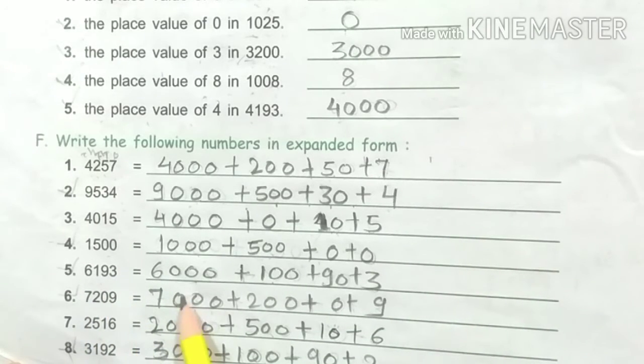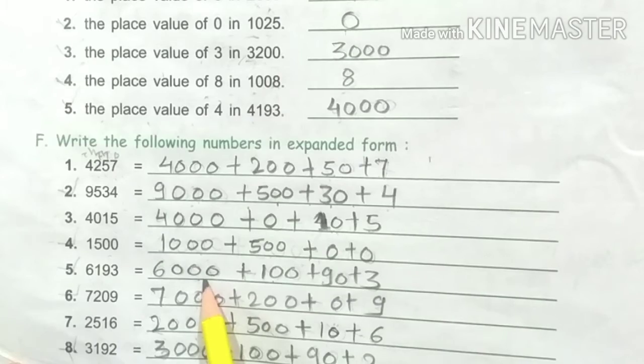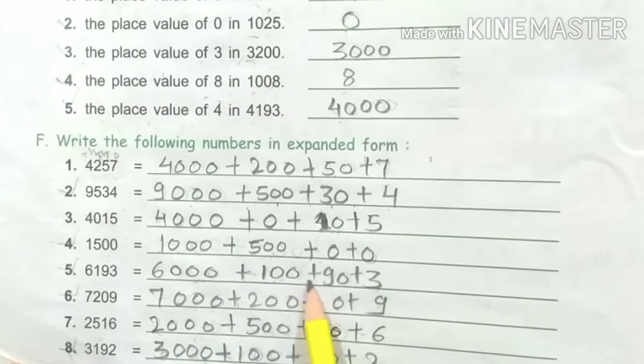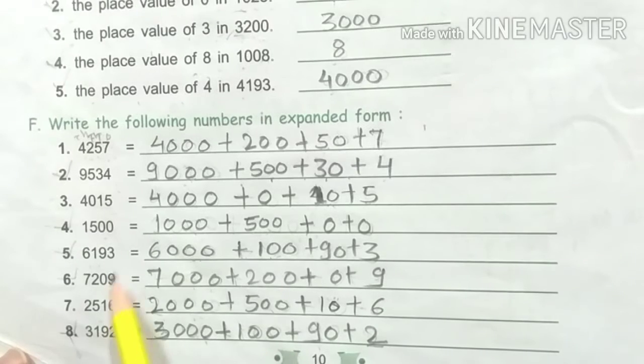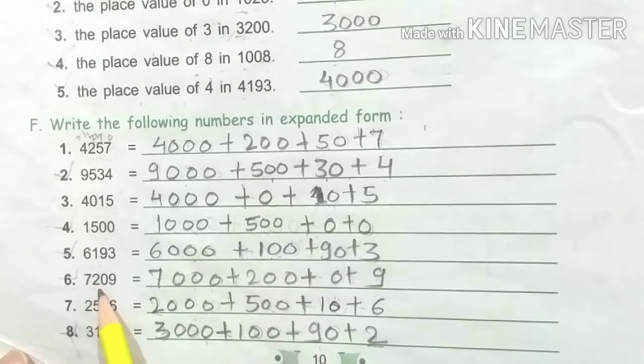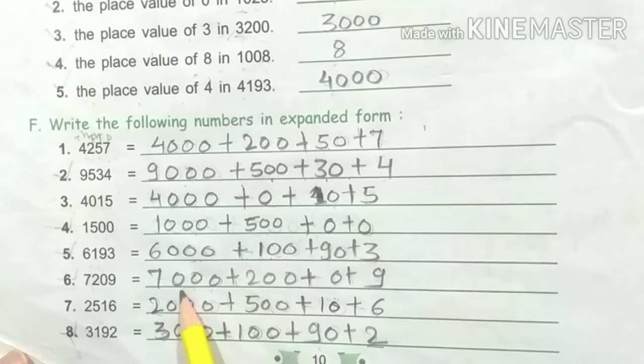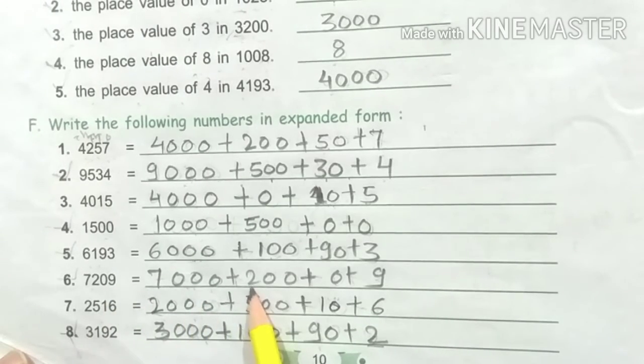Next, 6193: expanded form is 6000 plus 100 plus 90 plus 3.